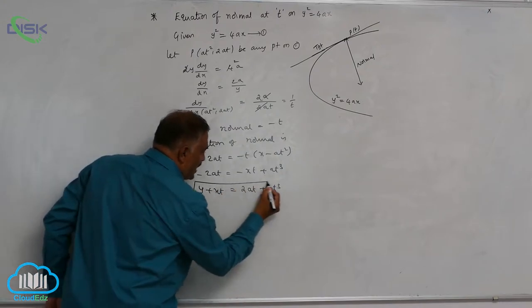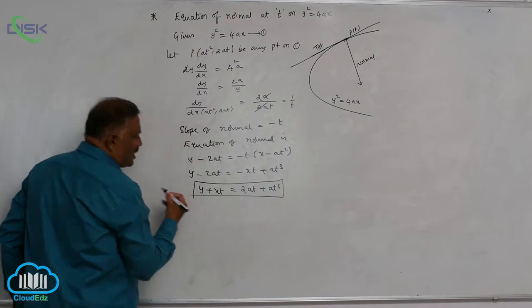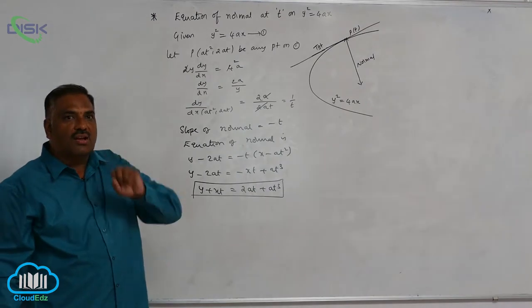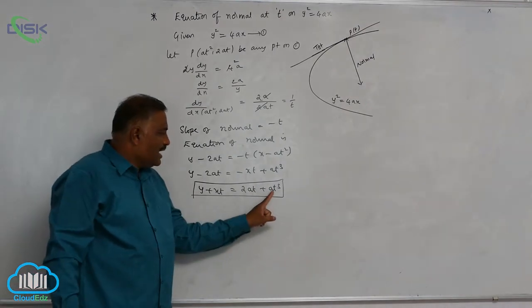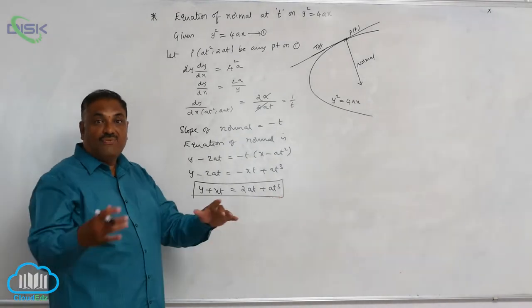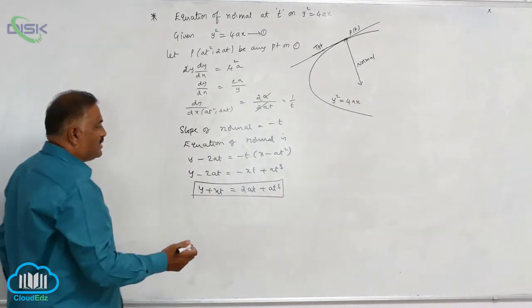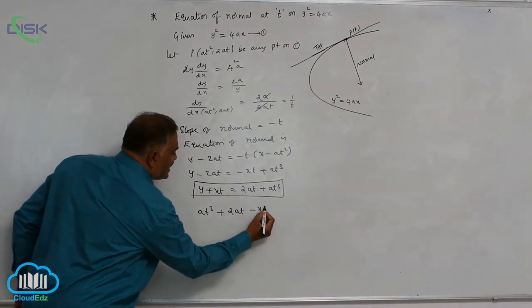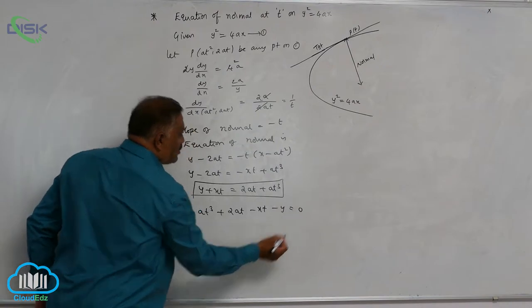y plus xt is equal to 2at plus at cube. This is clearly equation of normal at any point t. Now we also observe one logic. Here, parameter t is having maximum power 3. If you rewrite this equation, that is at cube plus 2at minus xt minus y is equal to 0.